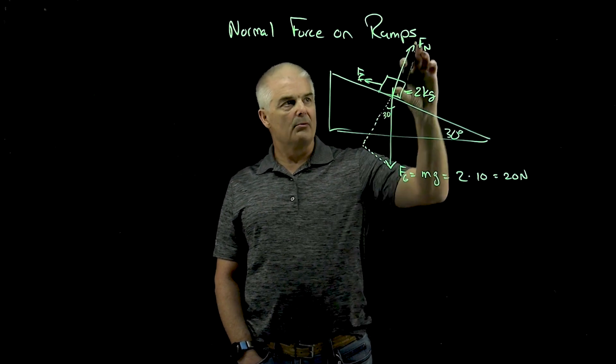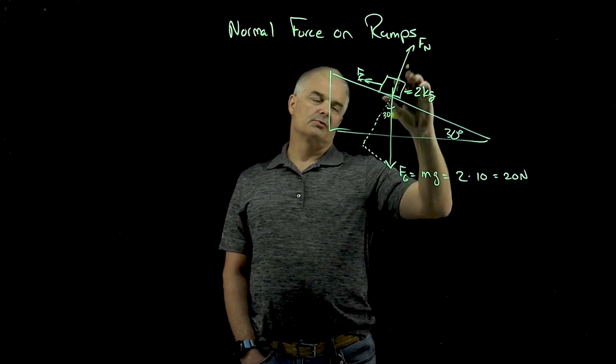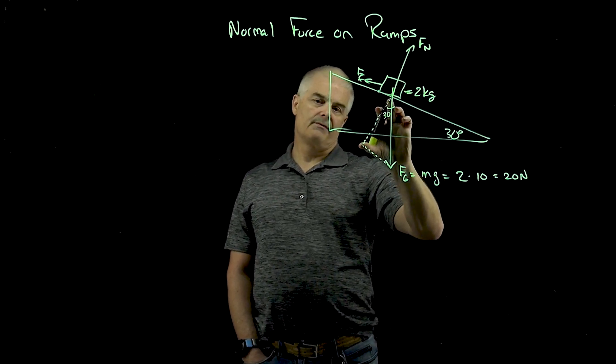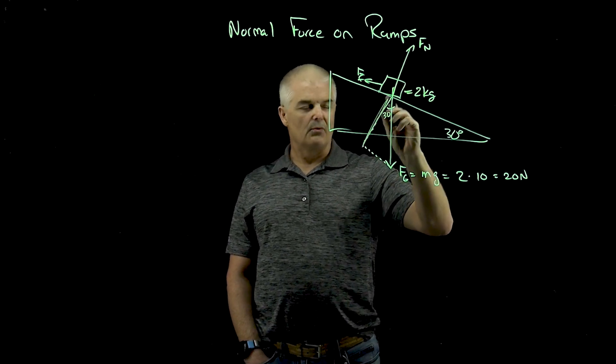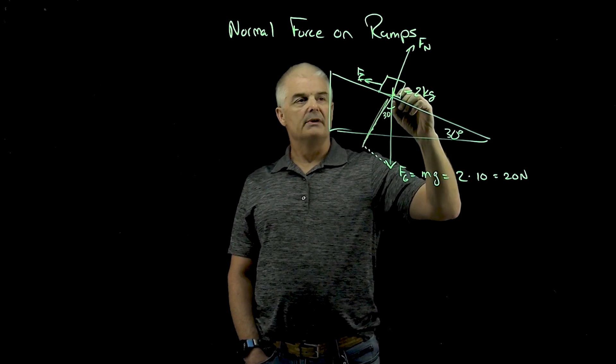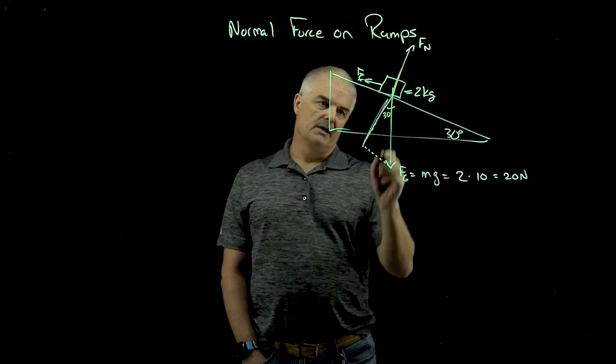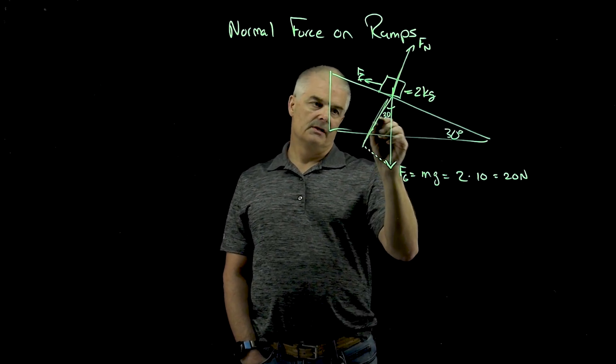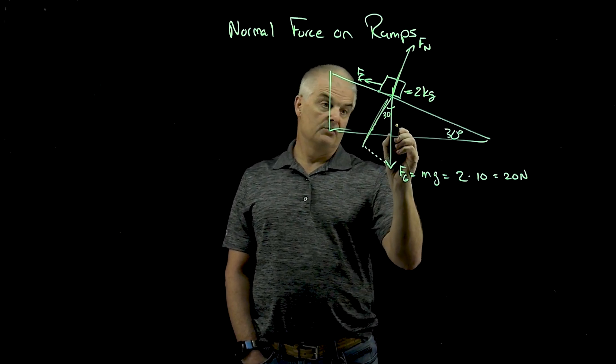And so the normal force, I didn't draw it super straight, is going to this right force right here. I'll just highlight this force, the magnitude of this force will be equal to the normal force. And so if you look at this, this is the hypotenuse is 20 right here, right?